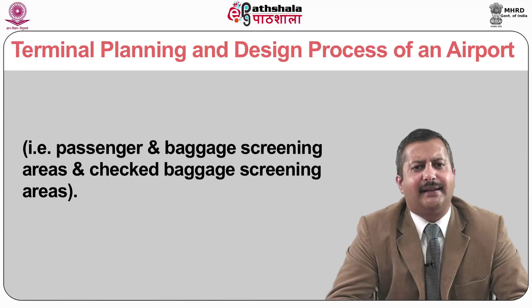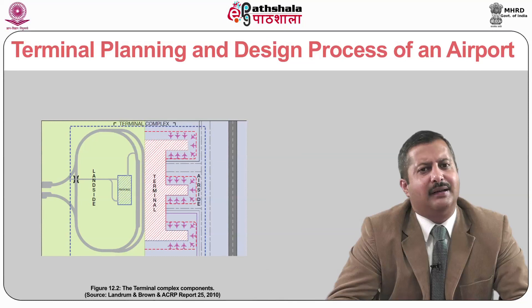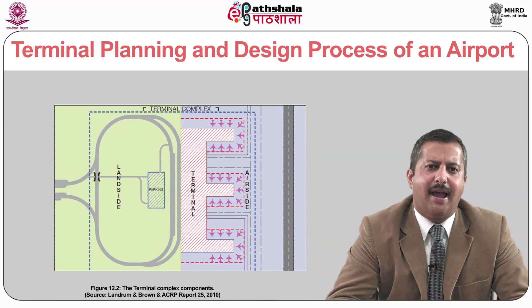Broadly the terminal complex encompasses three principal mechanisms: air side, terminal and landside. The air side terminal facilities include aircraft parking facilities, gate aprons, aircraft manoeuvring facilities, taxiways, ground service equipment, aircraft servicing, service and emergency response, blast fences, waste disposal, refueling facilities and winter procedures.